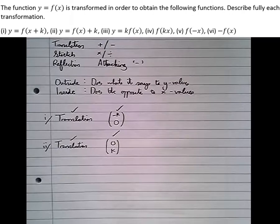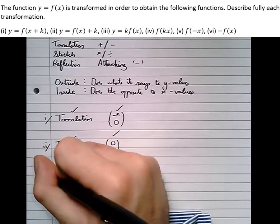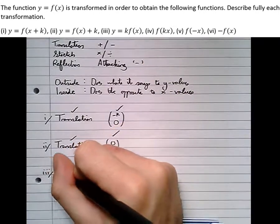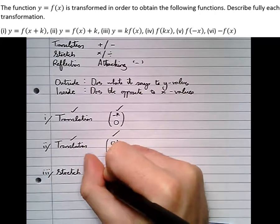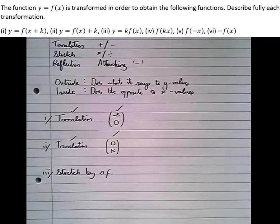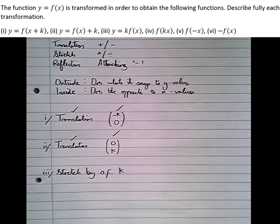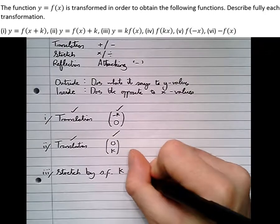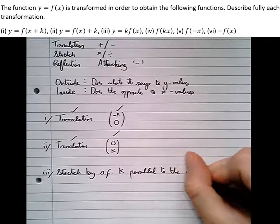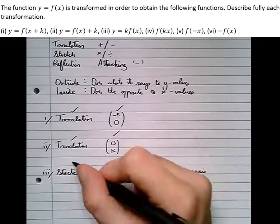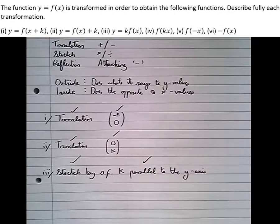Part three: we've multiplied by k, so this one's a stretch. Looking at this, we've multiplied by k on the outside of the bracket, so it does what it says to the Y values: scale factor k, we're going to multiply all the Y values by k, parallel to the Y axis. This is the wording needed to get the marks — 'stretch' is one mark, then another mark for 'by scale factor k parallel to the Y axis'.